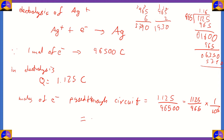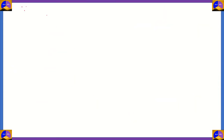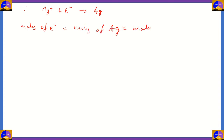The number of moles of electrons passed through the circuit is 1.166×10⁻⁵. Since in the equation Ag⁺ + 1 electron → Ag, moles of electrons equal moles of Ag equal moles of Ag⁺. One mole of Ag⁺ and one mole of electrons are required to form one mole of silver. So all of these have 1.166×10⁻⁵ moles.